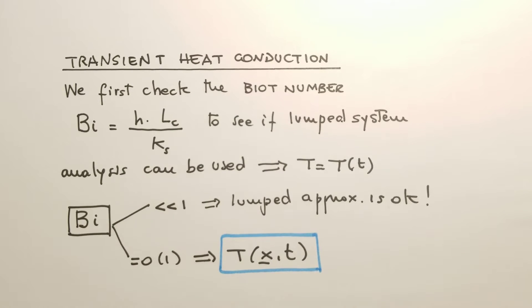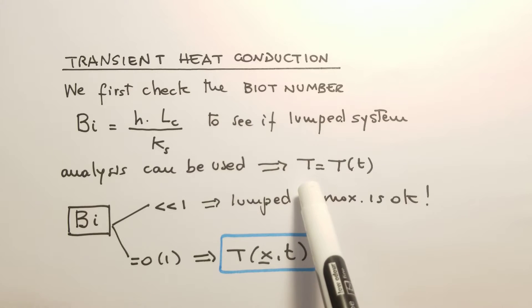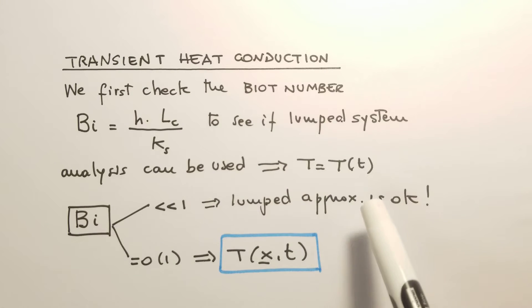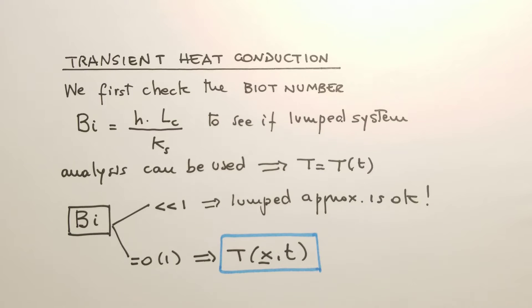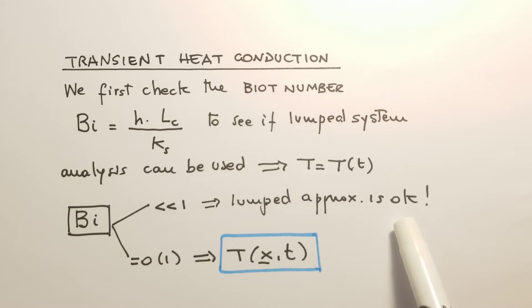We look at the Biot number because we want to check whether the lumped system analysis can be used. If this approximation is valid, then the temperature can be approximated to be only a function of time, not of space. If the Biot number is very small — for engineering applications, usually smaller than 0.1 — then the lumped system approximation is valid.